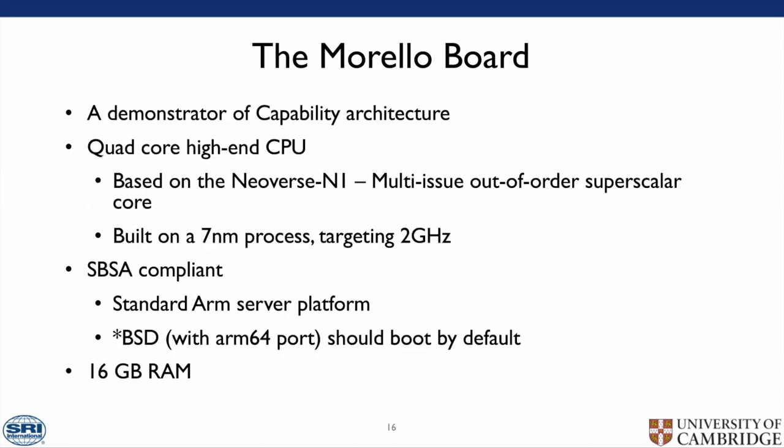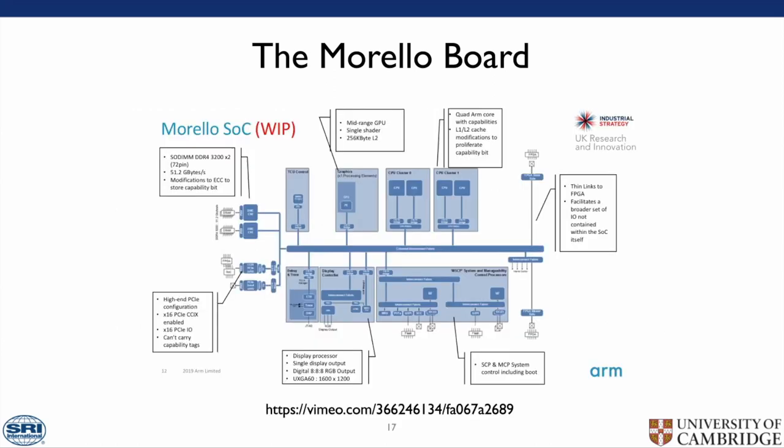The Morello board is a demonstrator of this capability architecture. It is a quad-core, high-end CPU based on the Neoverse N1 — the same CPU used in Amazon AWS Graviton2 instances. It is built on a 7nm process and will target 2GHz. It is compliant with the server-based system architecture, which is the standard ARM server platform, and BSDs with an ARM64 port should boot by default. The board features a quad-core ARM CPU modified to understand the capability architecture and to pass capabilities across the coherent bus, with capabilities able to be stored in RAM.